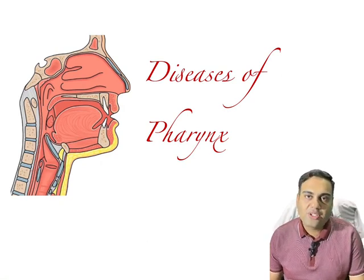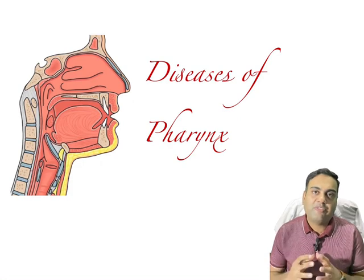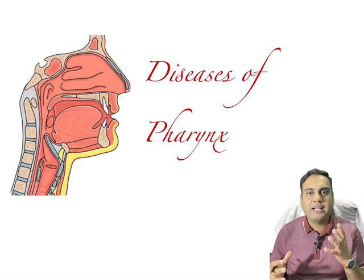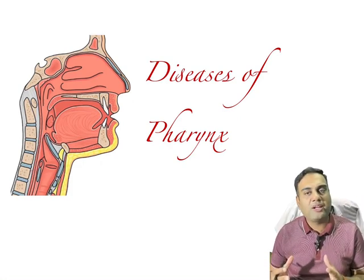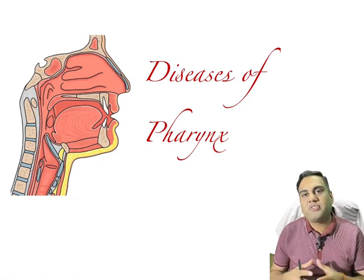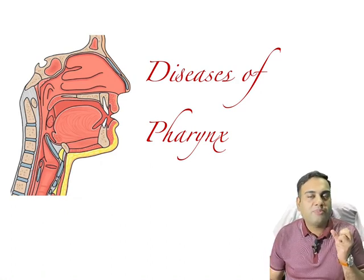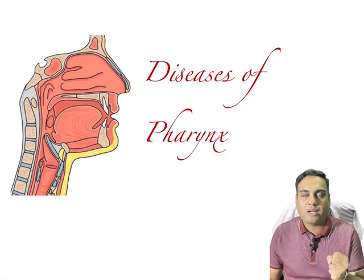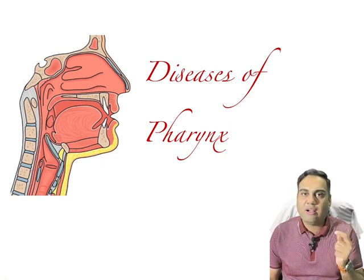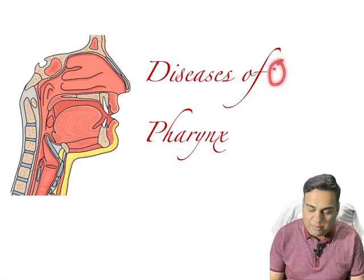We saw in the last lecture that the anatomy of pharynx — pharynx is three parts: nasopharynx, oropharynx, and laryngopharynx — and the applied aspects of its anatomy. Let's quickly take five seconds and revise the important points.